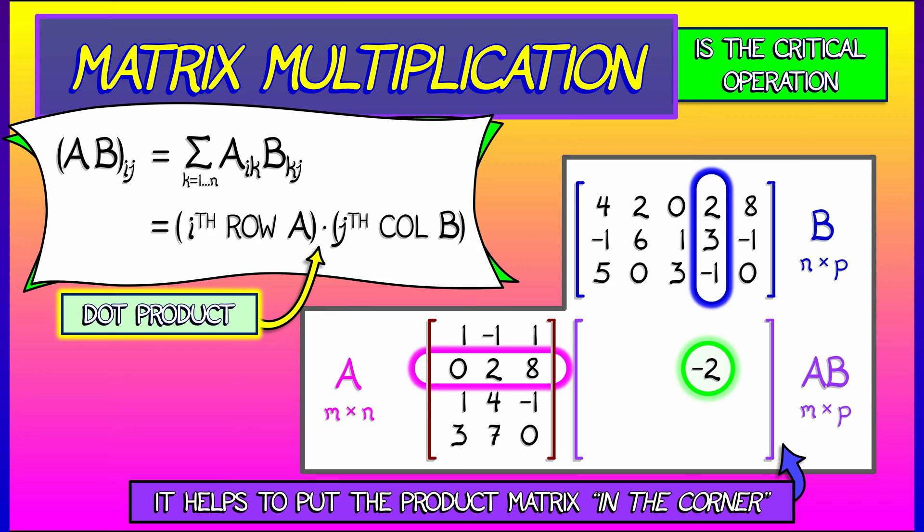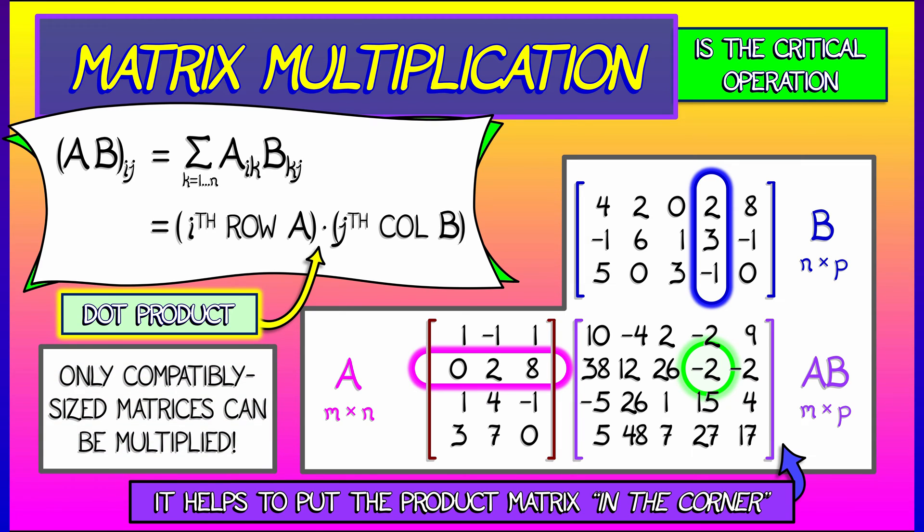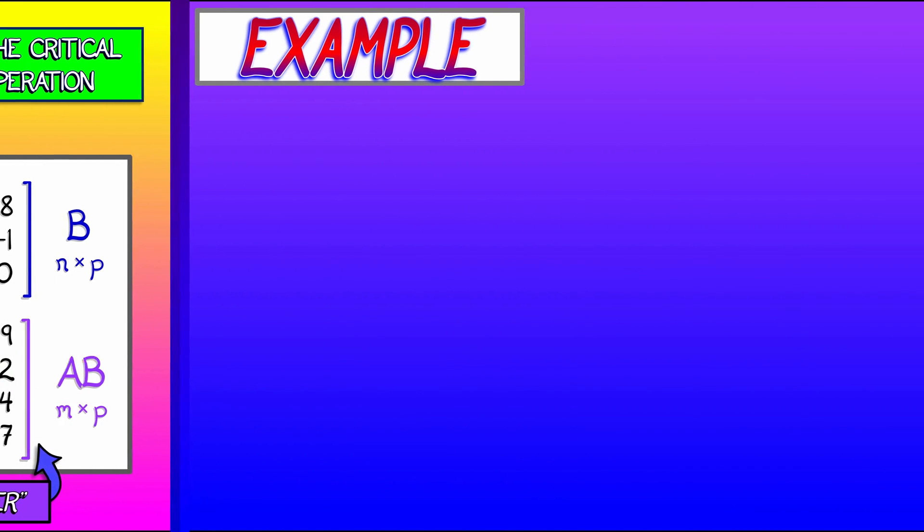Now, in general, to compute the product matrix, you have to redo that dot product computation for each element in the product matrix. And that's a lot of computation, and you've got to be careful to only multiply compatibly sized matrices.